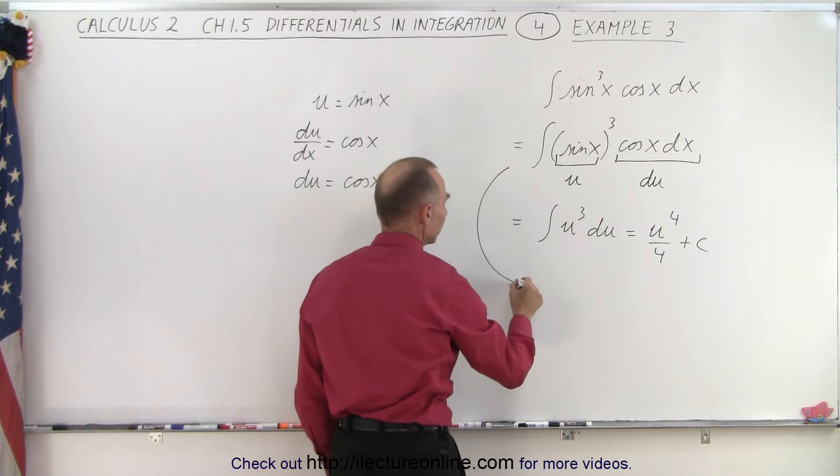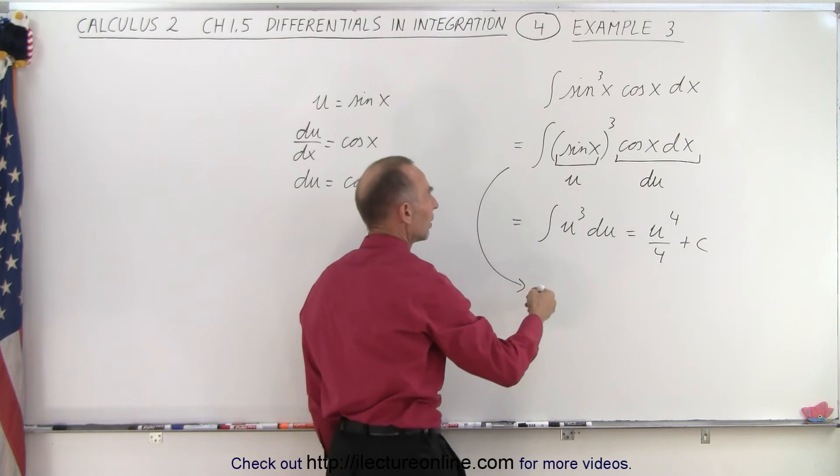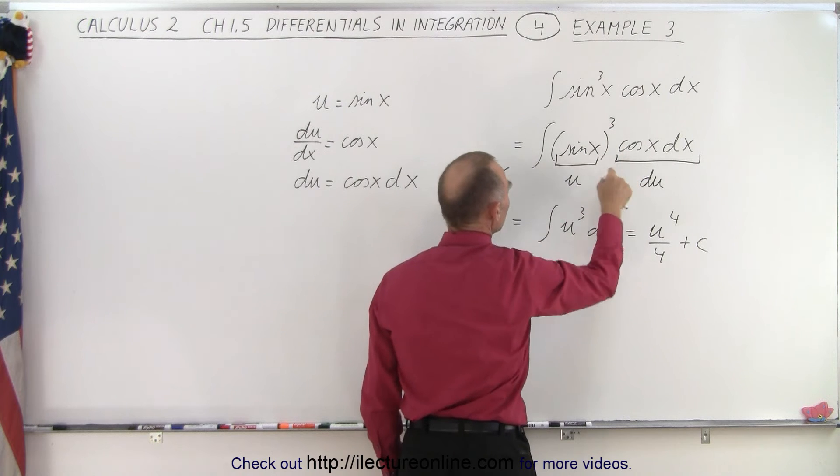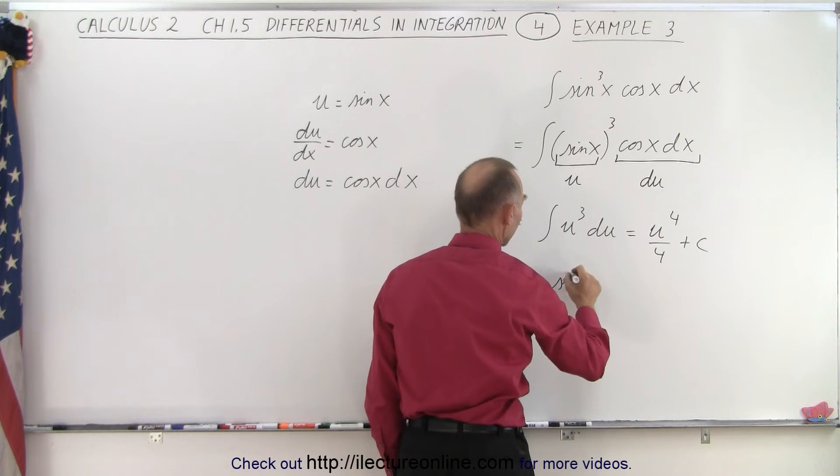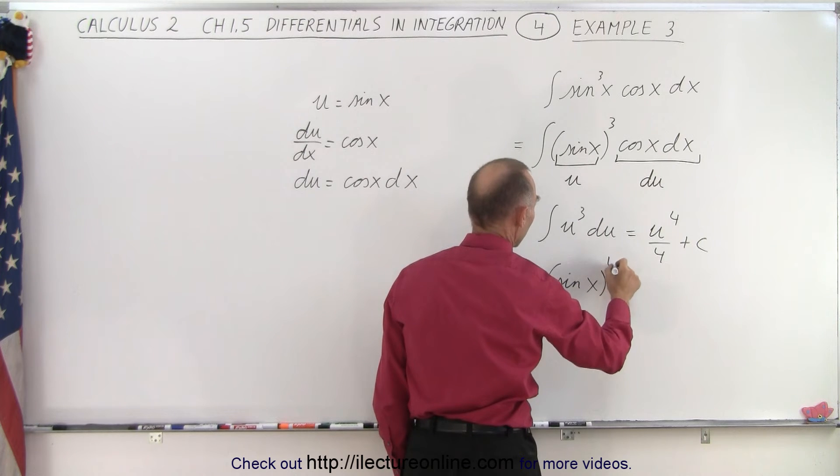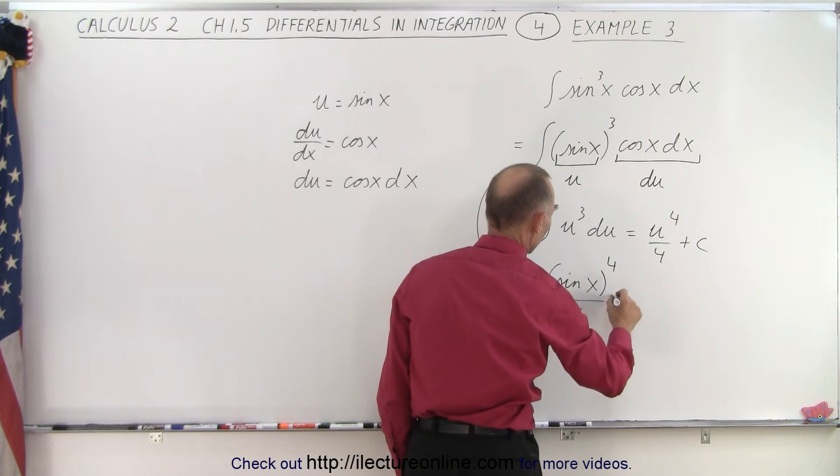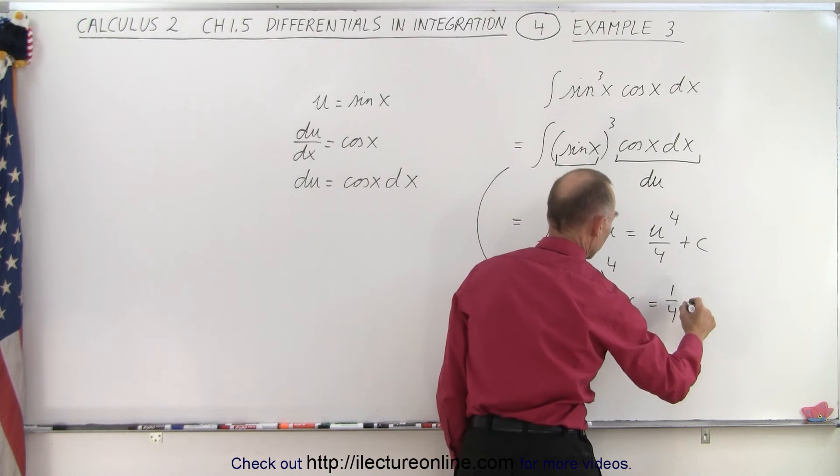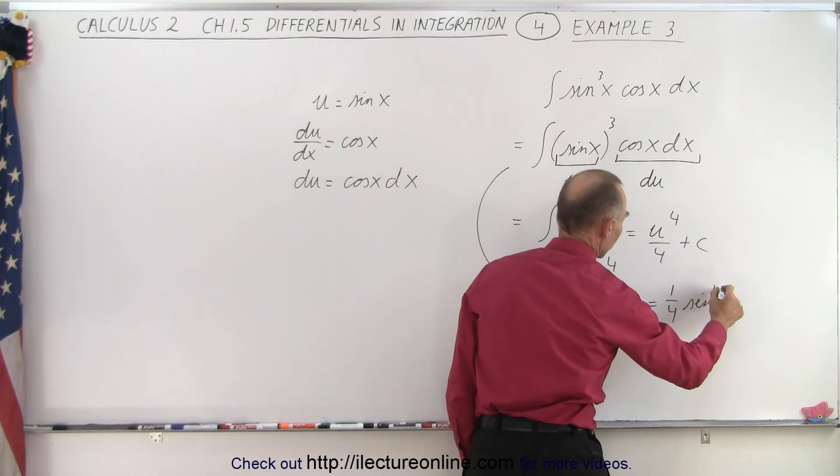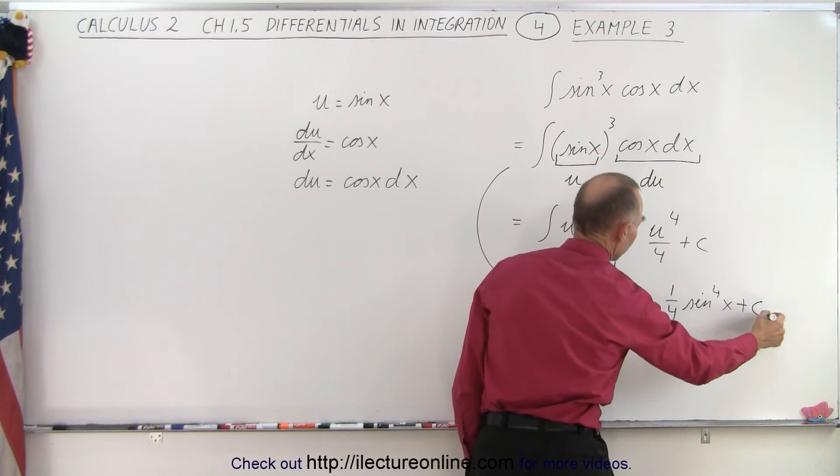So in the same way, we don't have to do that step. We can simply jump over that. Realize we have u cubed du. So this is equal to the sine of x raised to the fourth power divided by the new exponent plus a constant of integration. Or we can write it as one quarter the sine to the fourth of x plus c.